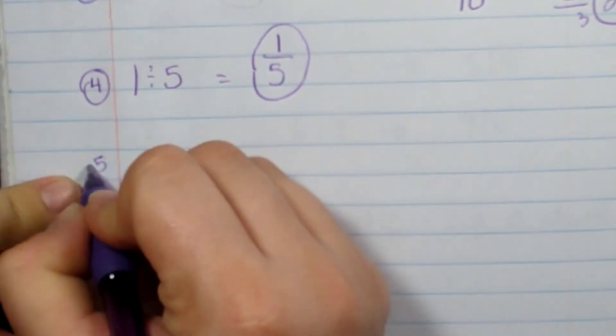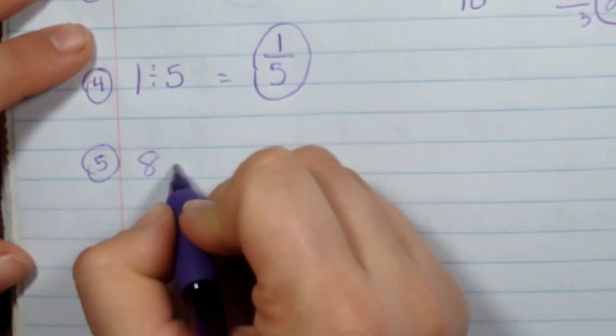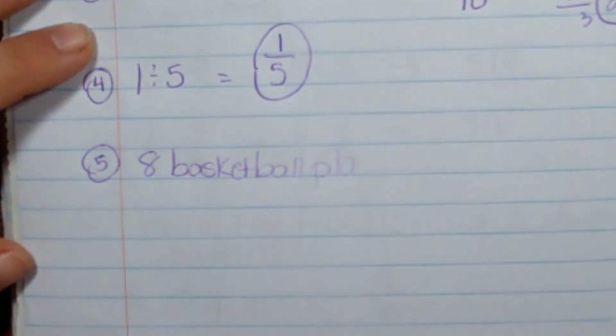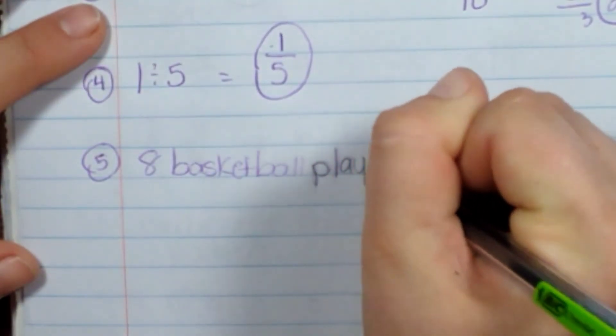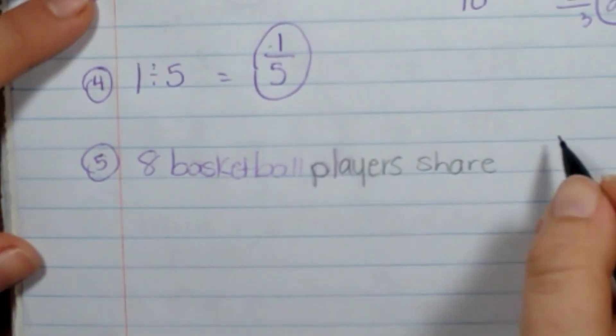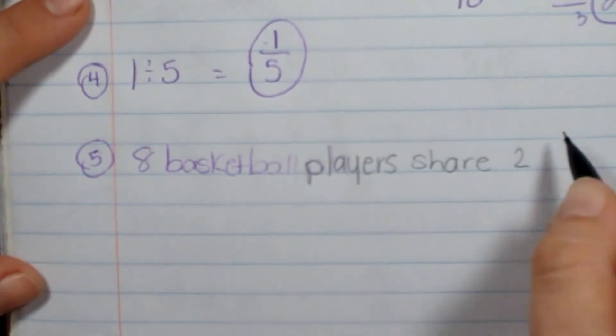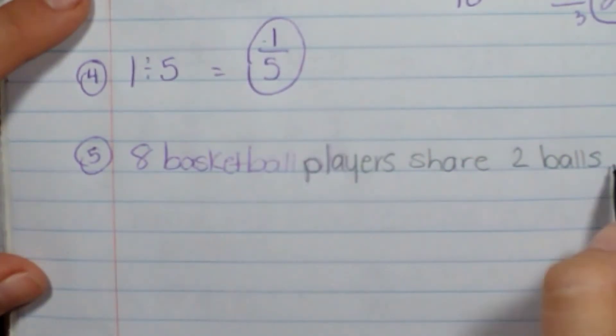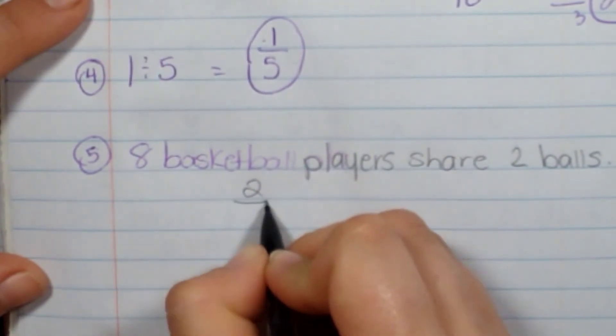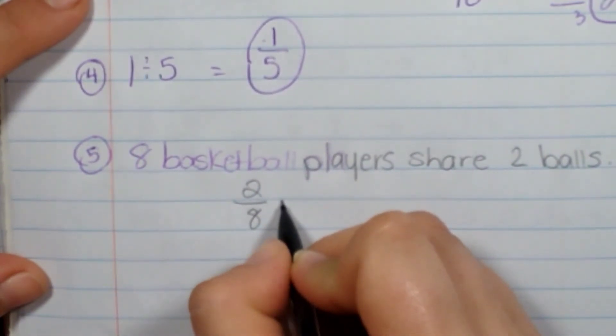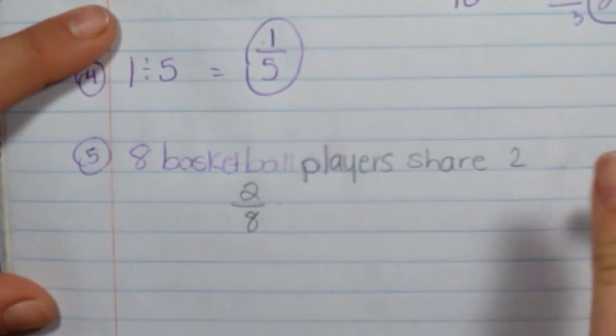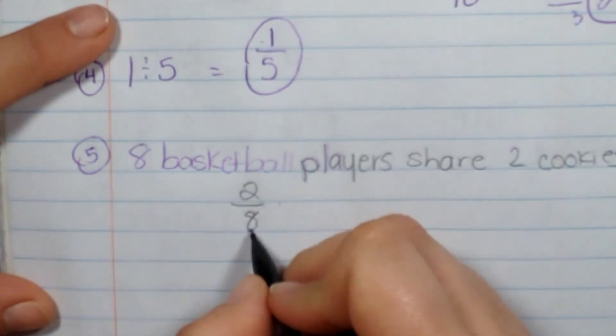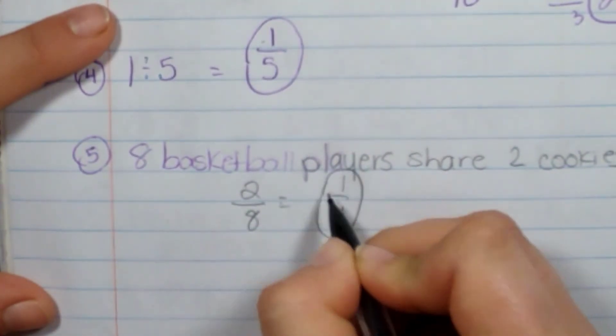Now the last kind I want to talk about is when I have eight basketball players—I'm going to use my pencil here—share two balls for practice. So that would be 2 balls divided by 8 players. Well, let's not do basketballs. We can't divide basketballs, can we? We'll just do cookies. So 2 cookies divided amongst 8 basketball players would be 1/4 because that's how I would simplify it.